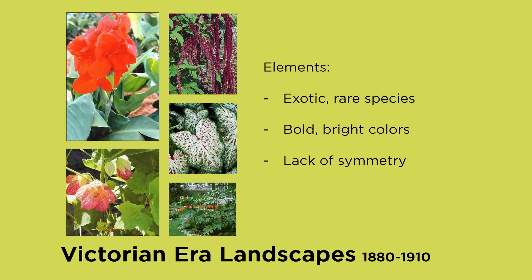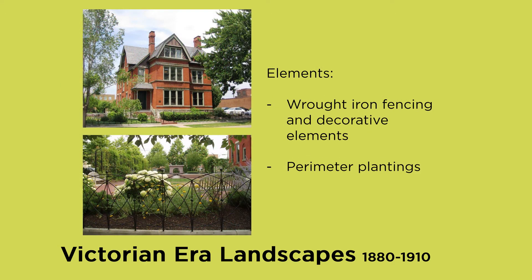Moving forward in time, we come into the Victorian era, roughly 1880 to 1910. This was a vast departure from the previous. The Victorian era favored exotic, exuberant, rare species. Especially with landscape design, you were seen as worldly if you had a rare, bright, colorful plant in your garden. Bold and bright colors were really favored. We see a vast movement away from symmetry; the Victorian landscape is much less focused on symmetry and formality. Wrought iron became very popular as decorative elements and as fencing.